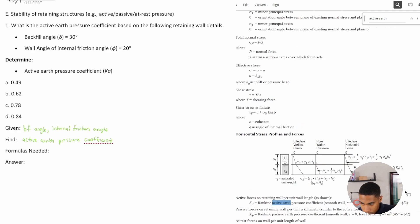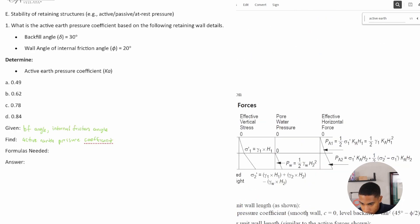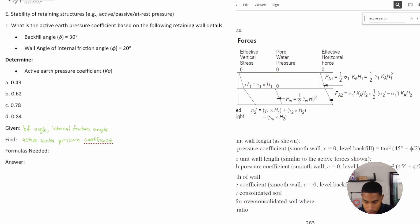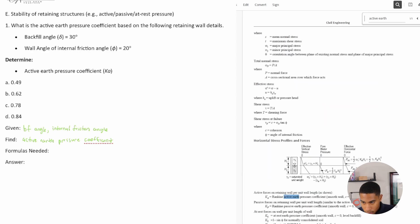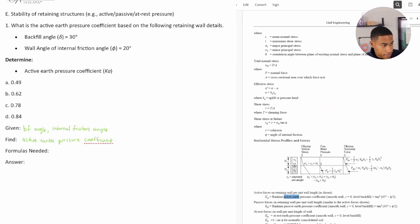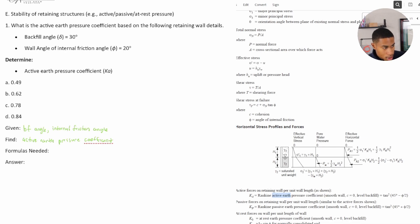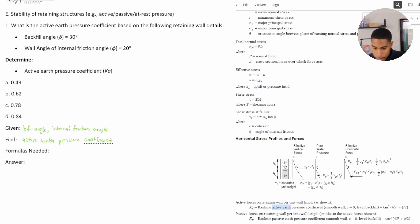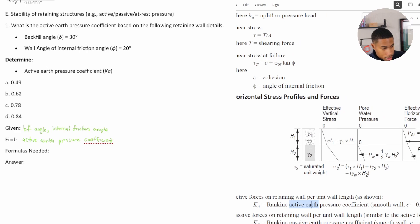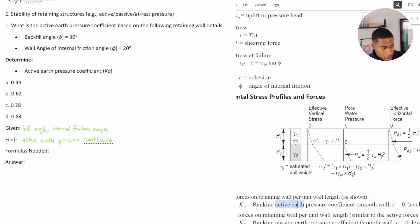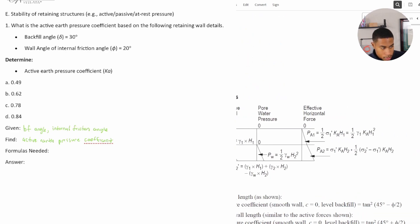Ka is equal to the Rankin active earth pressure coefficient. Okay, so I believe that this might be what I need. And so I find it says that it equals tangent squared. Whoa, you can't see anything. Let me just move me, but then you should be able to see everything.